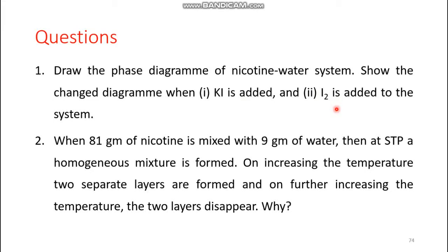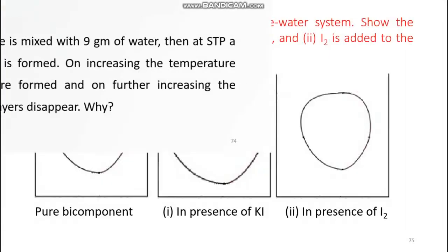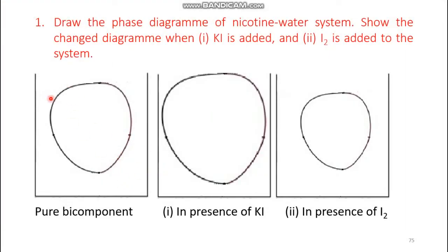Now let's add iodine. Iodine is soluble in both nicotine and water. When we add a third substance that is soluble in both components, the mutual solubility increases, so the upper CST lowers and the lower CST rises. In contrast, potassium iodide is soluble in only water and insoluble in nicotine, so the upper CST rises and the lower CST falls.